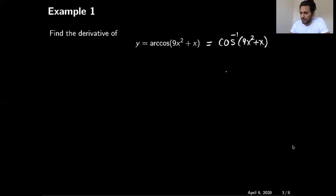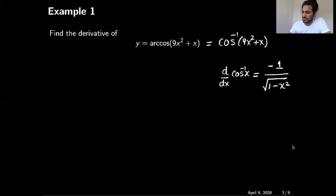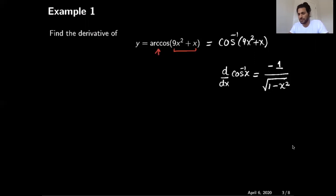One thing I need is the derivative of cosine inverse x. I can see from the previous slide it was minus 1 divided by the square root of 1 minus x squared. That is the derivative of inverse cosine. Since the question in our example is the composition of two functions — 9x squared plus x and cosine inverse — one function is sitting inside the other function. So we have to use the chain rule in order to compute the derivative of that function.